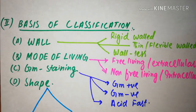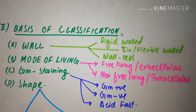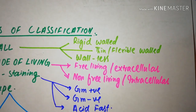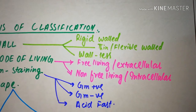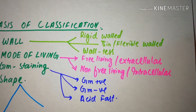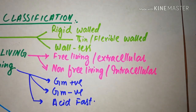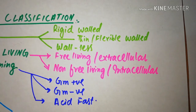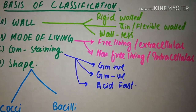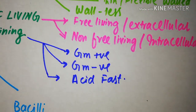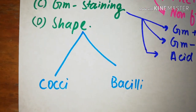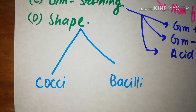On the basis of cell wall, bacteria may be rigid walled, thin or flexible walled, and wallless bacteria. On the basis of mode of living, bacteria can be divided into free living or extracellular, and non-free living or intracellular variety. Staining divides bacteria into gram positive, gram negative, and acid fast groups. On the basis of shape, bacteria can simply be cocci and bacilli.